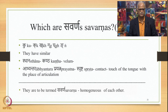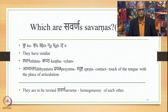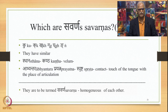Then there is a peculiar case. Panini has mentioned something like Ku. Ku stands for K, K, G, G and N — these 5 consonants. They have similar Sthana, namely Kantha, and similar Abhyantara Prayatna, namely Sprashta — contact or touch of the tongue with the place of articulation. These 5 are to be termed Savarna of each other and are referred to as Ku.